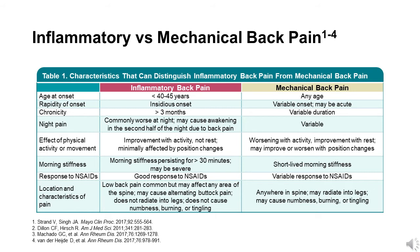Many of these characteristics of inflammatory back pain contrast with those of mechanical back pain. Patients with axial spondyloarthritis also frequently have extra-articular manifestations like uveitis, psoriasis, and inflammatory bowel disease. Additional comorbidities associated with axial SpA include fatigue, osteoporosis, cardiovascular disease, and sleep apnea.